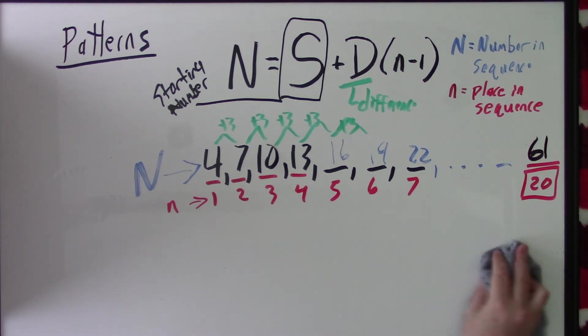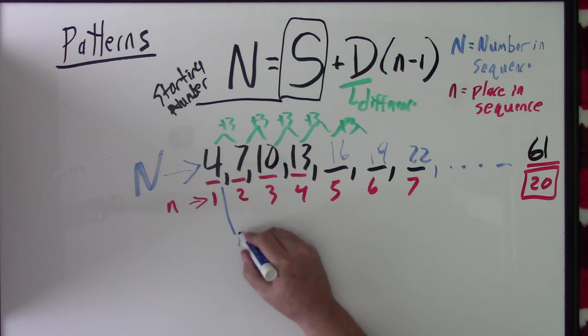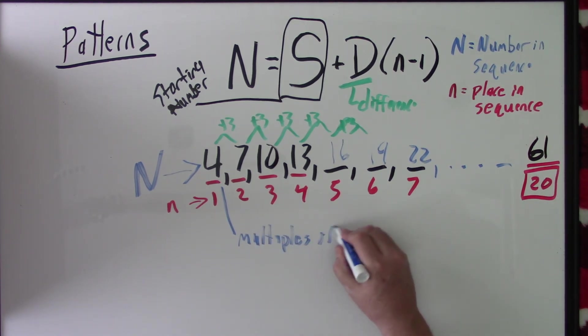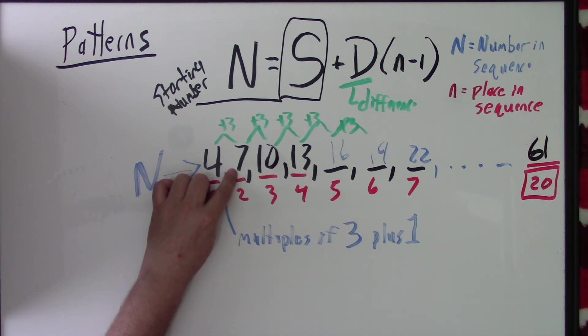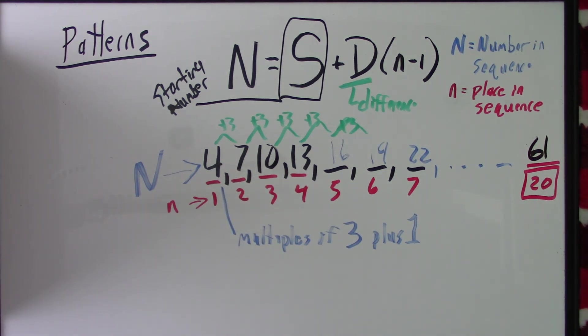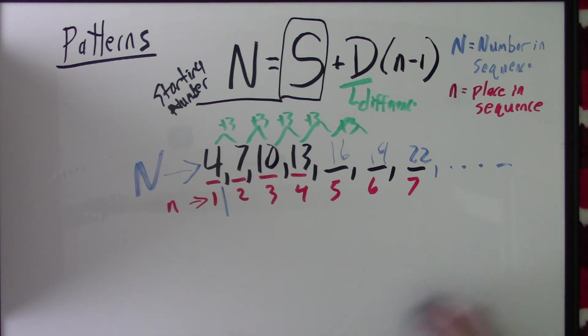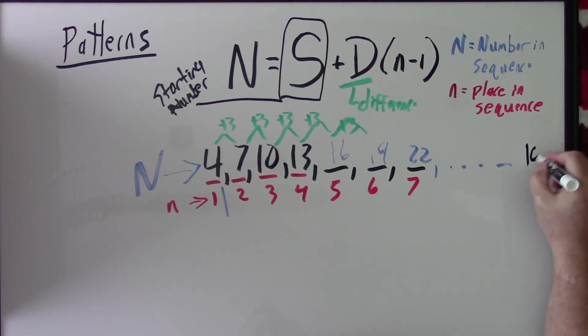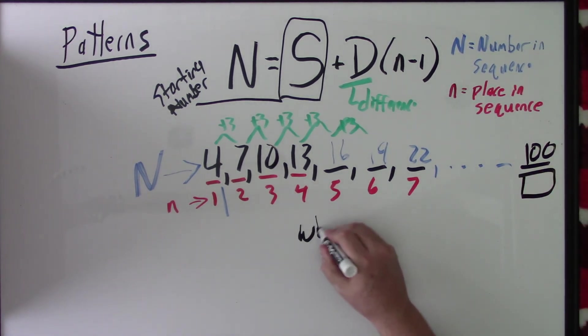Well, now we can go the other way. Let's say these are all, I'm adding 3 over and over again. So, these numbers are multiples of 3 plus 1. So, 4 is 3 plus 1. 7 is 6 plus 1. 10 is 9 plus 1. 13 is 12 plus 1. So, they're all multiples of 3 plus 1. So, a multiple of 3 is 99. Plus 1 is 100. So, now what I want to do is, 100 is in this sequence. What place is 100?